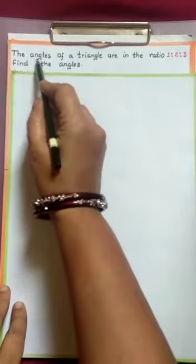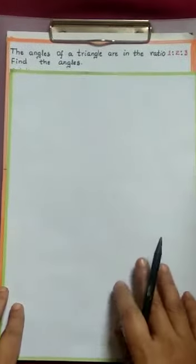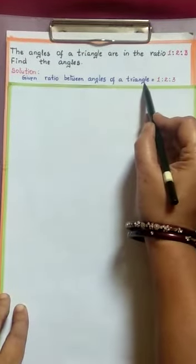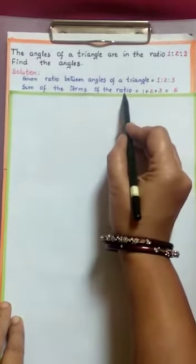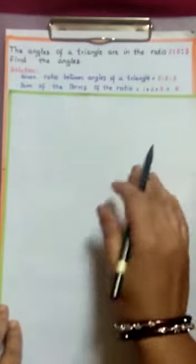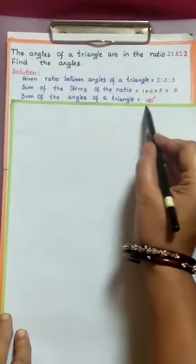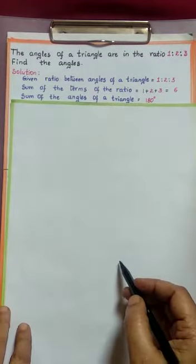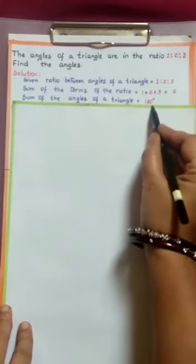The angles of a triangle are in the ratio 1 is to 2 is to 3. We need to find the angles. Given ratio between angles of a triangle is 1:2:3. Sum of parts is 1 plus 2 plus 3, which equals 6. As we know, the sum of the interior angles of a triangle is 180 degrees. So, first part by total parts into 180 degrees.